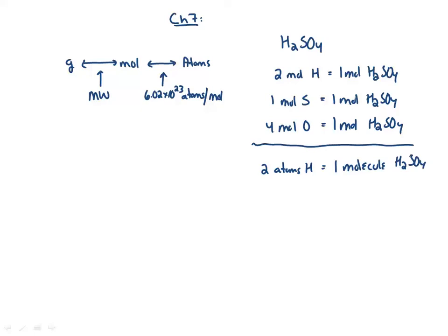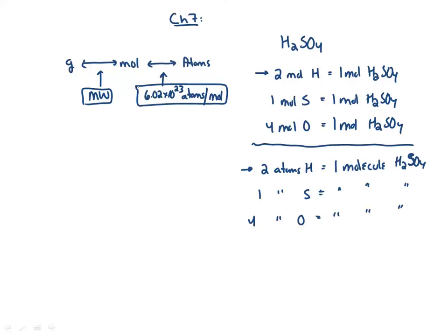The ratio is the same whether you use moles or atoms. Where you apply it in the problem differs — if you're using the atoms version, you would do it after you used Avogadro's number; if you're in the moles part, you'd do it when you were at moles in the problem. Four atoms of oxygen per one molecule of H2SO4. Those are really the three conversion factors: your molecular weight conversion factor, Avogadro's number, and the number of atoms or moles in a compound.